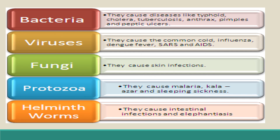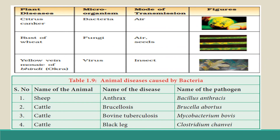Algae are not causing any significant diseases other than eutrophication, which we will discuss in a subsequent lesson. The list of diseases caused by microbes in plants includes citrus canker, caused by bacteria and spread through the air, rust of wheat caused by fungi, and yellow vein mosaic of bhindi caused by viruses. Diseases in animals caused by bacteria include anthrax, brucellosis, bovine tuberculosis, and blackleg.